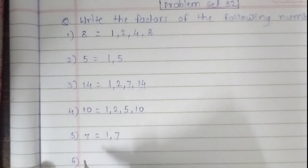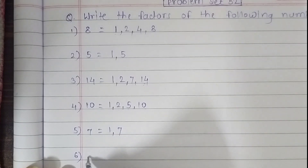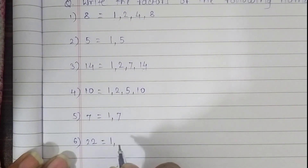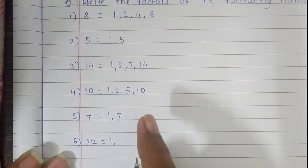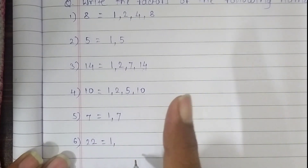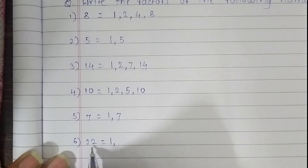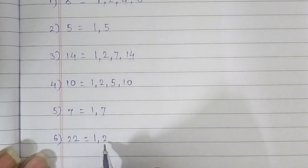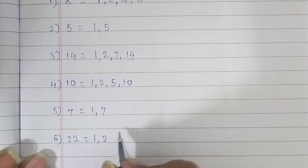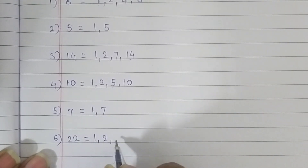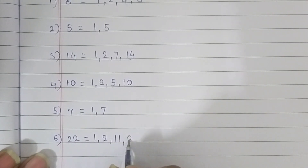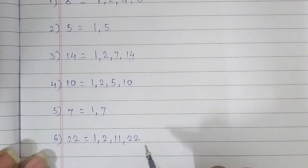The 6th question is 22. Look here. The first factor of 22 is 1. Remember, each and every number has the factor 1. The second factor of 22 is 2 — it comes in the 2 times table: 2 elevens are 22. Then it comes in the 11 times table: 11 twos are 22. And finally, it comes in the 22 times table.